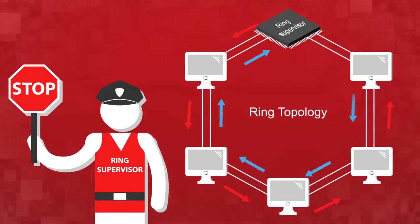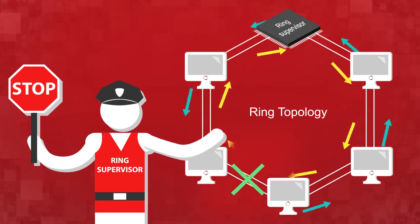With the device level ring protocol or DLR, there's a traffic cop known as a ring supervisor who directs traffic and keeps data from going in circles.